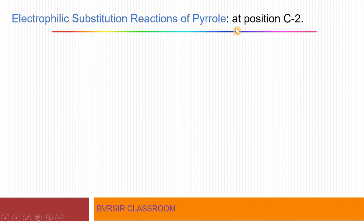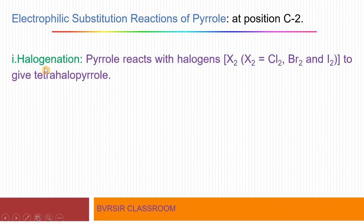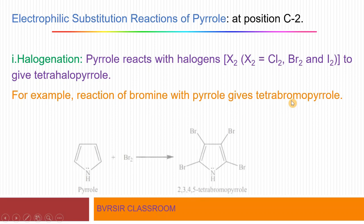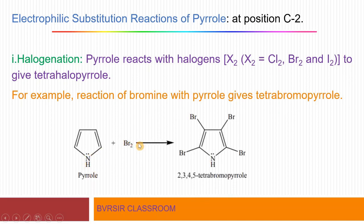Electrophilic substitution reactions of pyrrole occur at position 2. The first reaction is halogenation. Pyrrole reacts with halogens X2 — Cl2, Br2, or I2 — to give tetrahalopyrrole, as four halogen atoms react. For example, the reaction of bromine with pyrrole gives 2,3,4,5-tetrabromo pyrrole. All four positions (2, 3, 4, 5) become substituted, forming the tetrabromo pyrrole product.